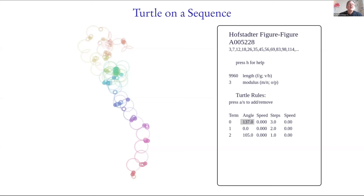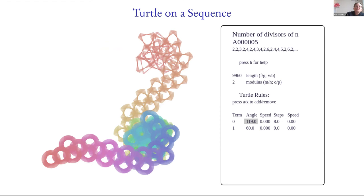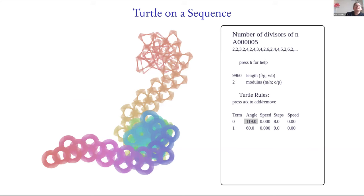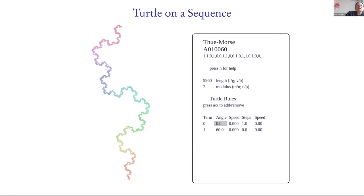Here are a few other examples. Here's the 2-adic valuation of the integers — this has a sort of fractal structure to it, and it's just beautiful. Here's another one with gradually changing behavior, some repetition and then a switch. Here's the Thue-Morse sequence, which is associated to the Koch snowflake, so it will actually draw that if you choose the right turtle settings. Here's the continued fraction of pi — I like this one because no matter how you play with it as a turtle walk, you can't get anything that doesn't look just random, because the sequence is mysterious. There are known statistics about continued fraction expansions — you're more likely to get ones, then less likely to get twos — so you sort of see these arcing things, and you can tell it's pretty unpredictable.